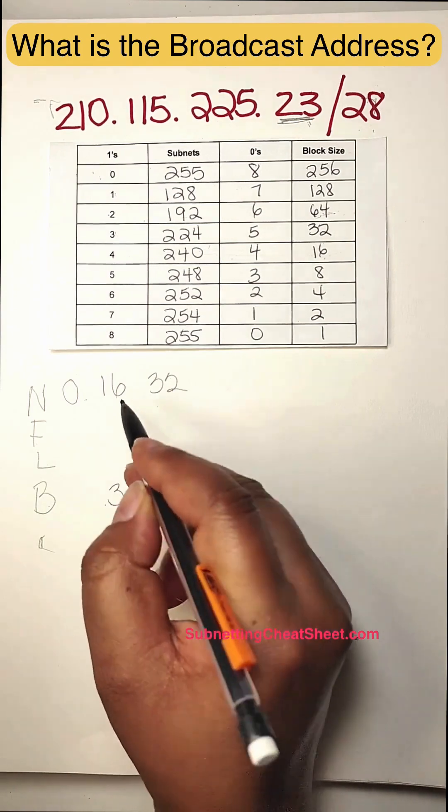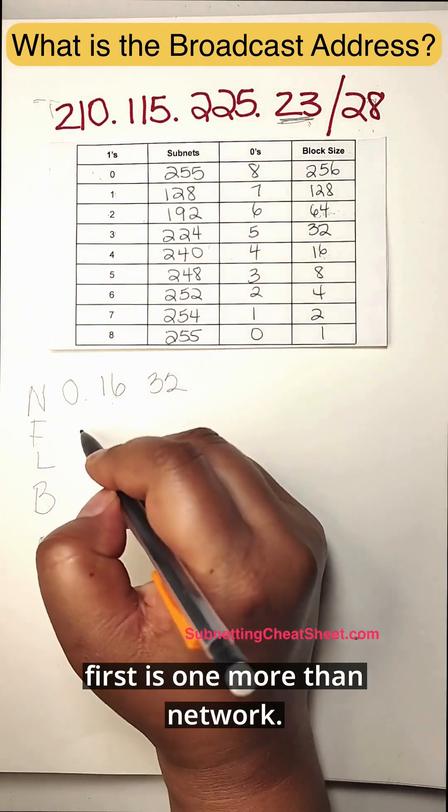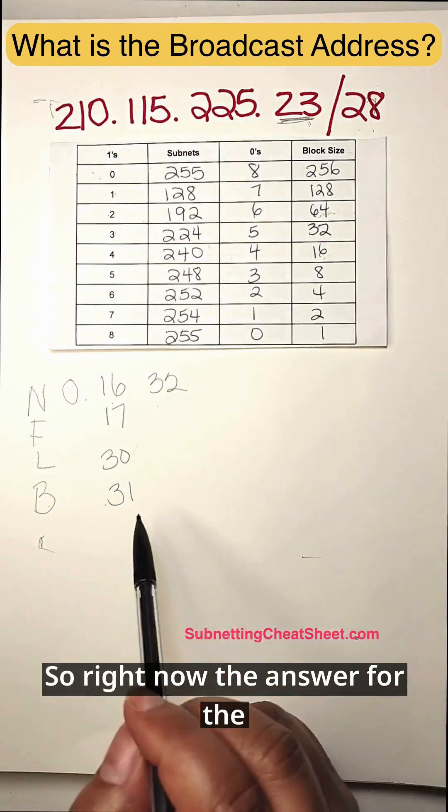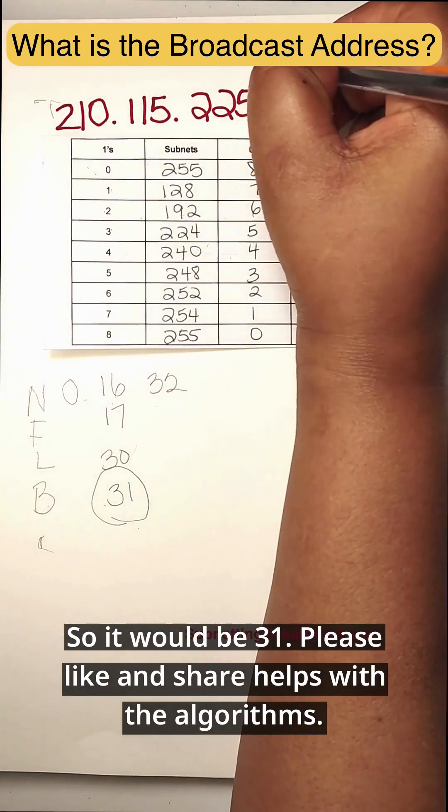Last is 30. And 16 is one, first is one more than network. So right now the answer for the broadcast is this one. So it would be 31.